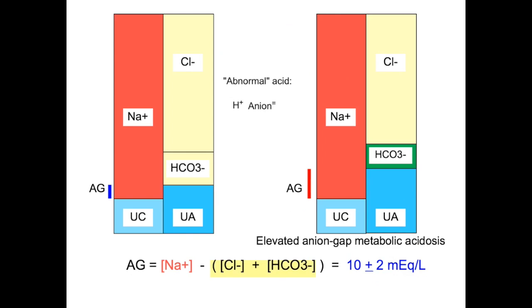In an elevated anion gap metabolic acidosis, an abnormally large amount of an organic acid, such as lactate or ketoacid, is generated. The acid dissociates into hydrogen ion, which combines with bicarbonate, reducing its concentration.